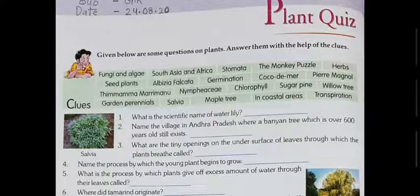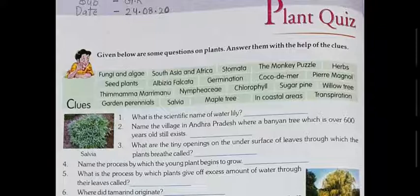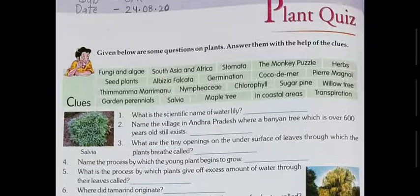Given below are some questions on plants and we will be answering these questions with the help of the clues given in the clue box. Clues like fungi, algae, germination, chlorophyll, sugar pine, and willow tree are all given. We'll have to choose the most appropriate answer from the clue box and fill in the blanks. So let's start.